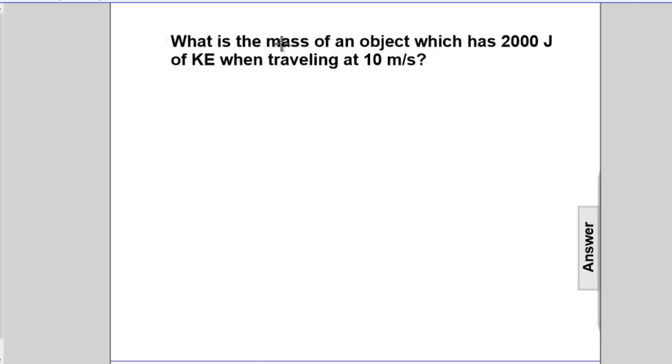Let's take inventory of what we know. They're going to ask us for mass. They state that the object has 2,000 joules of KE and is traveling at 10 meters per second.